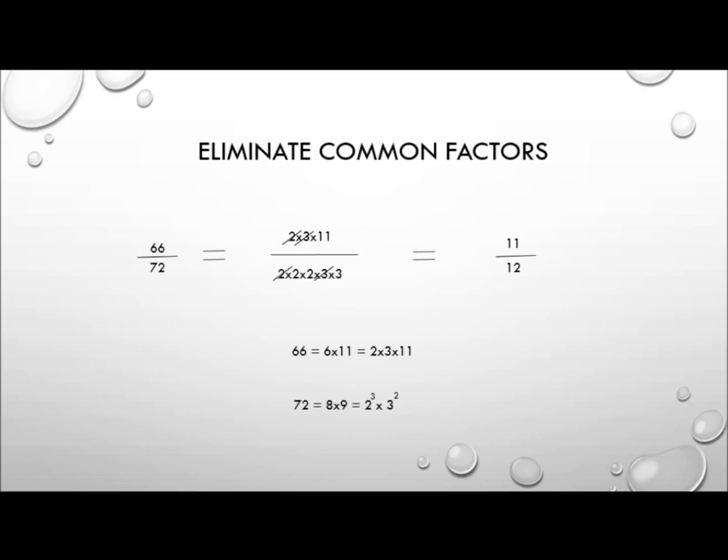To reduce fractions to their simplest form, all we have to do is eliminate the common factors. So what we're looking for is to break down both the numerator and the denominator into their prime factors.